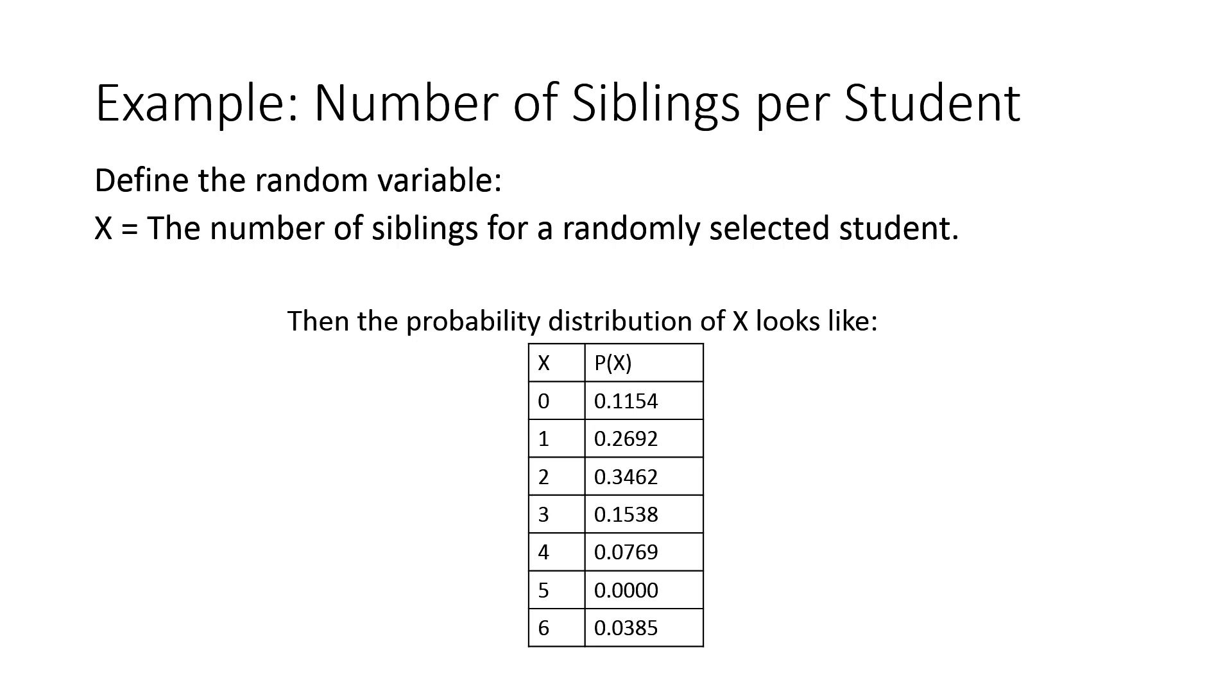In our case, where we were looking at number of sibling data, then if we called X to be the number of siblings for randomly selected student, then we could write out the probability distribution here. In the first column, I list out all the possible values of X because the number of siblings could be anywhere from 0 to 6. And in this column, I list out how likely they are to occur. And this is a probability distribution of a discrete random variable.